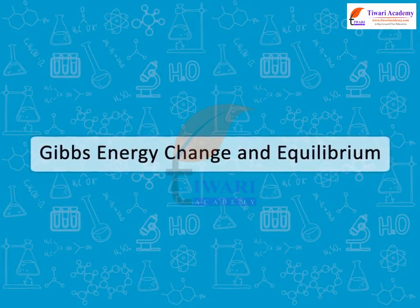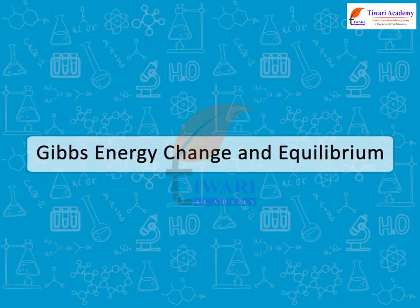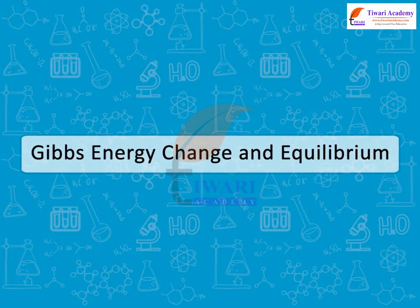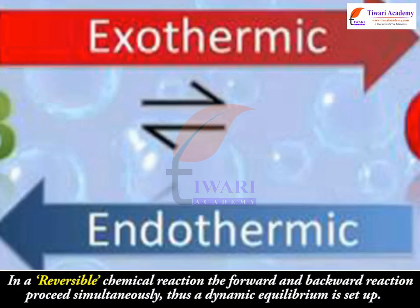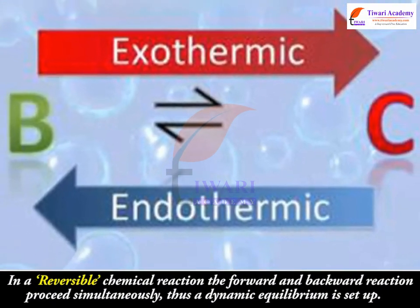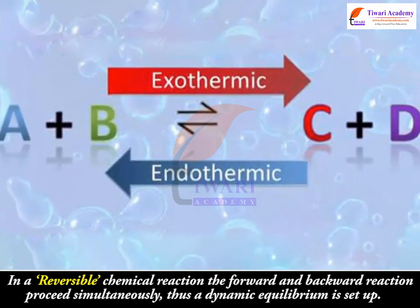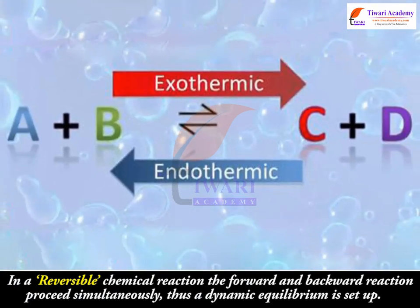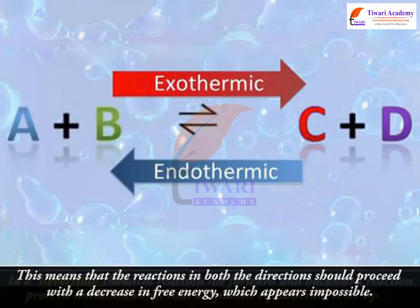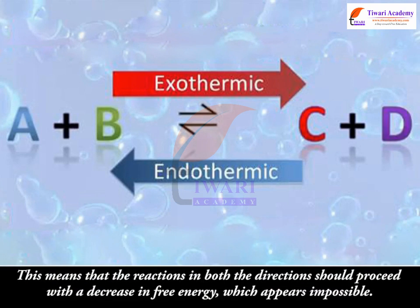Gibbs Energy Change and Equilibrium. In a reversible chemical reaction, the forward and backward reactions proceed simultaneously. Thus, a dynamic equilibrium is set up. This means that the reactions in both directions should proceed with a decrease in free energy, which appears impossible.